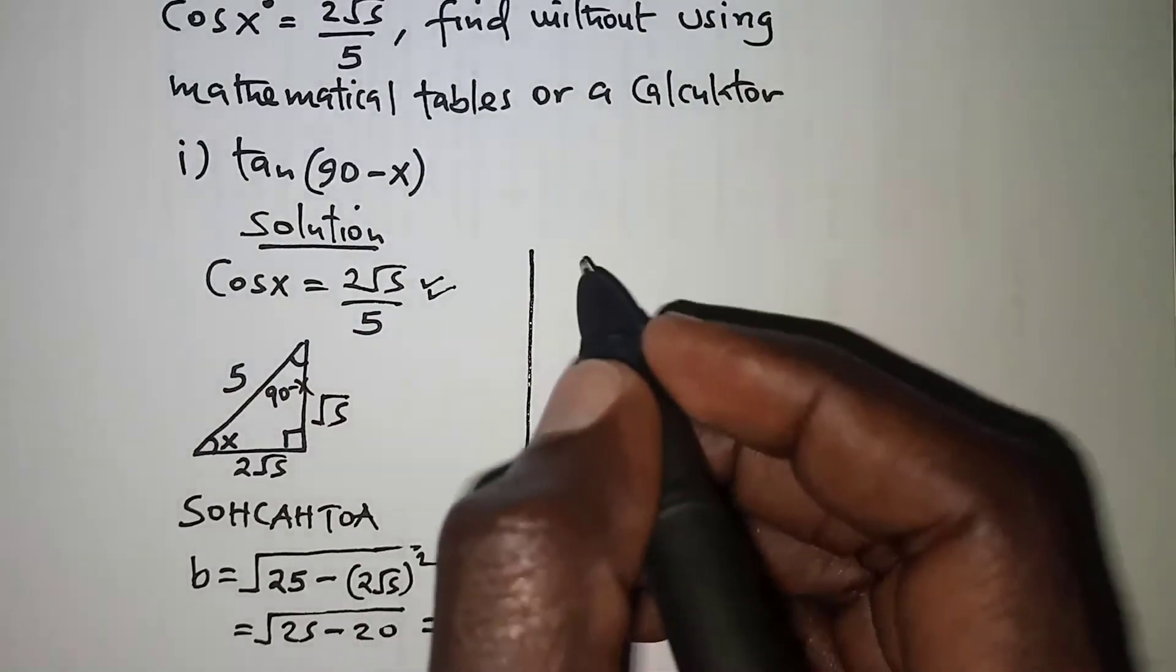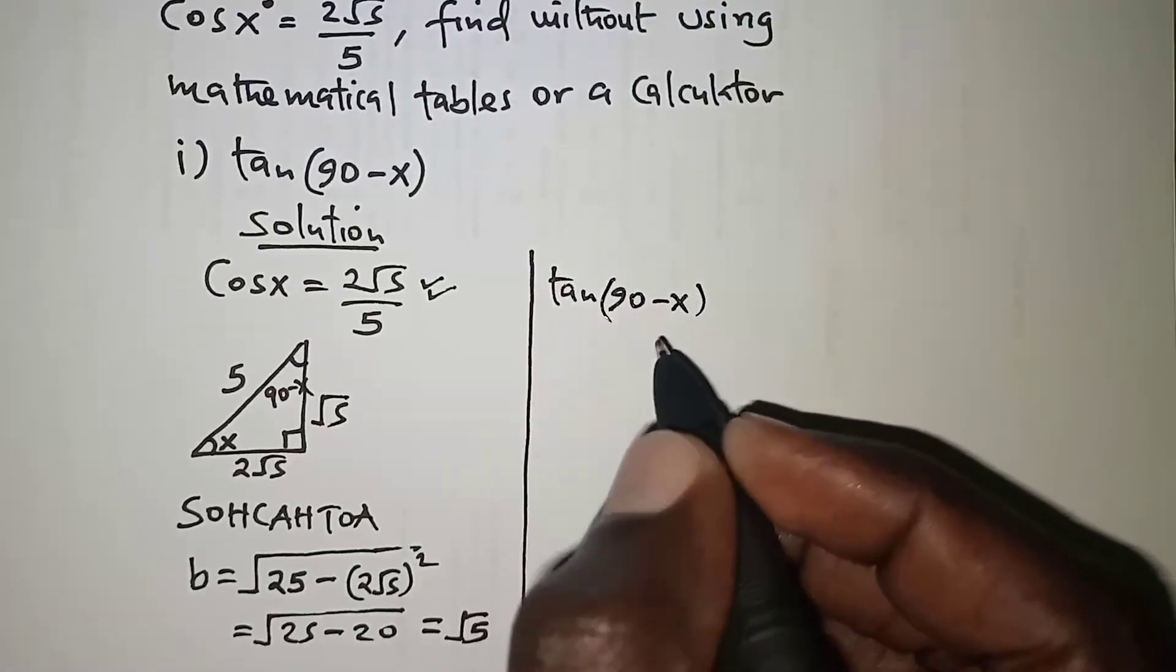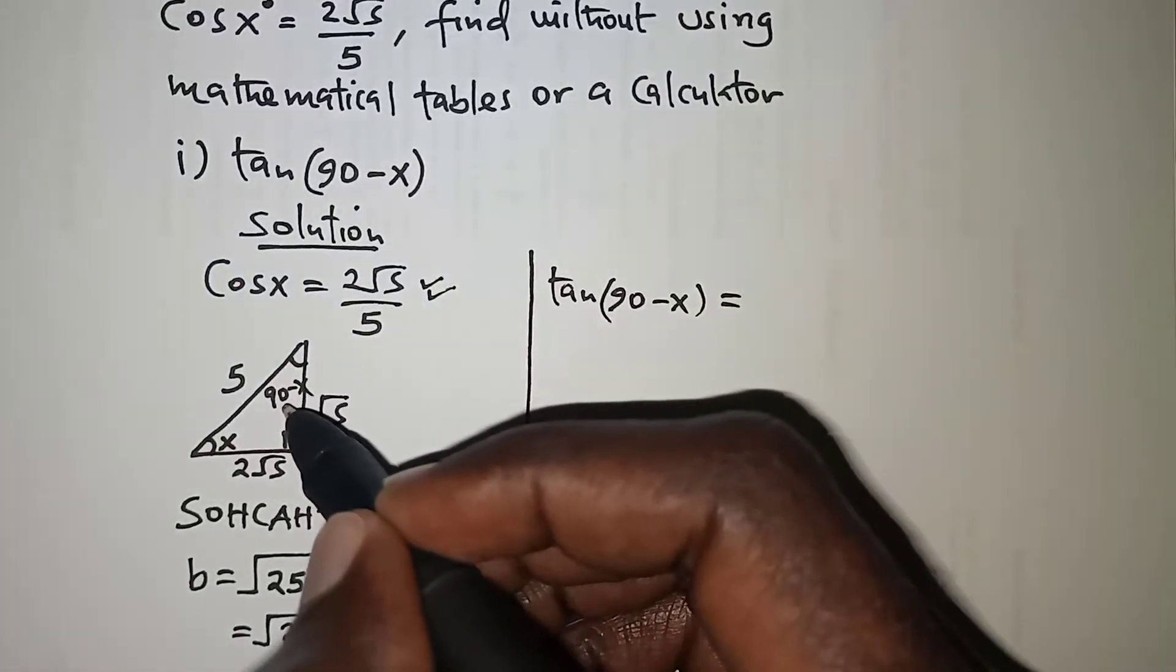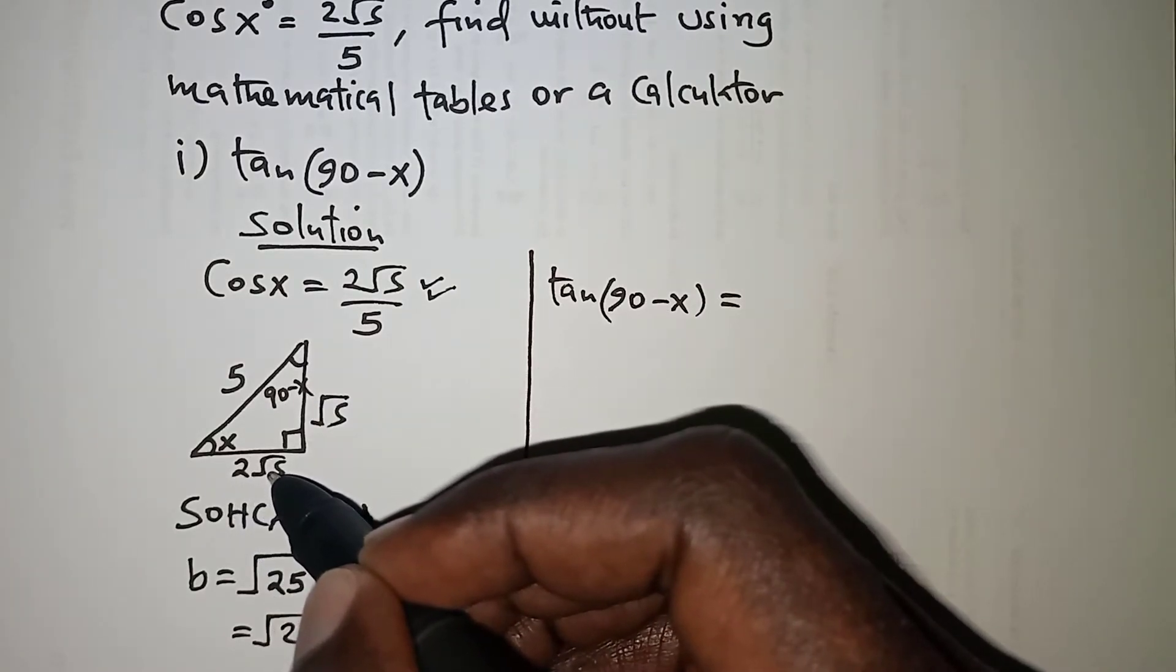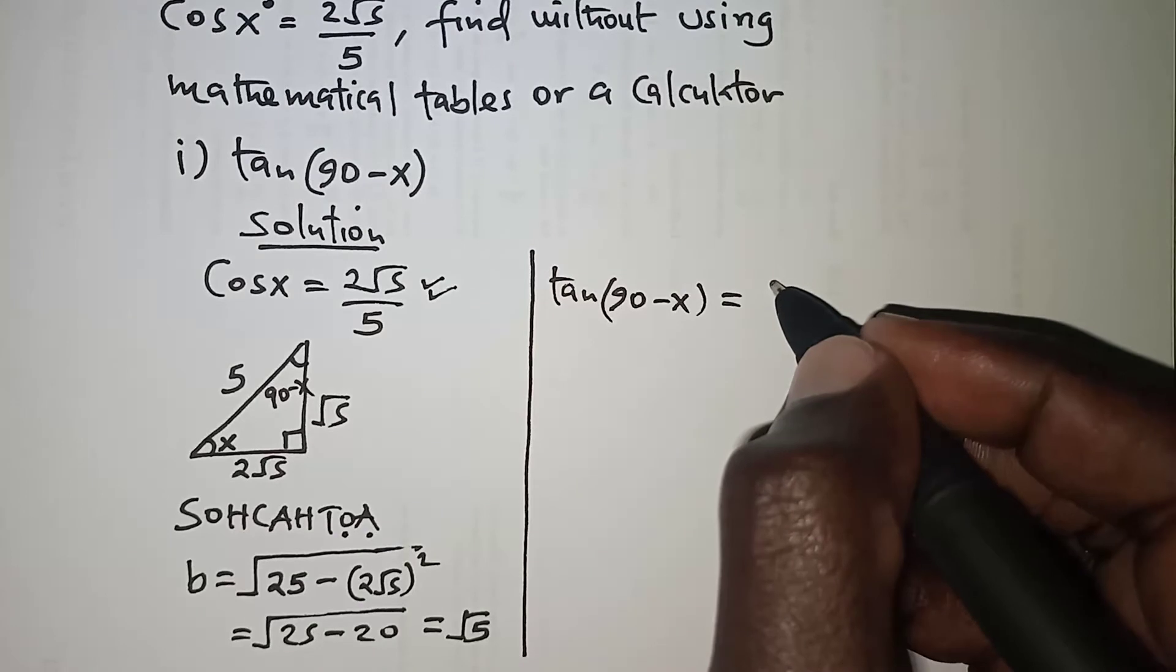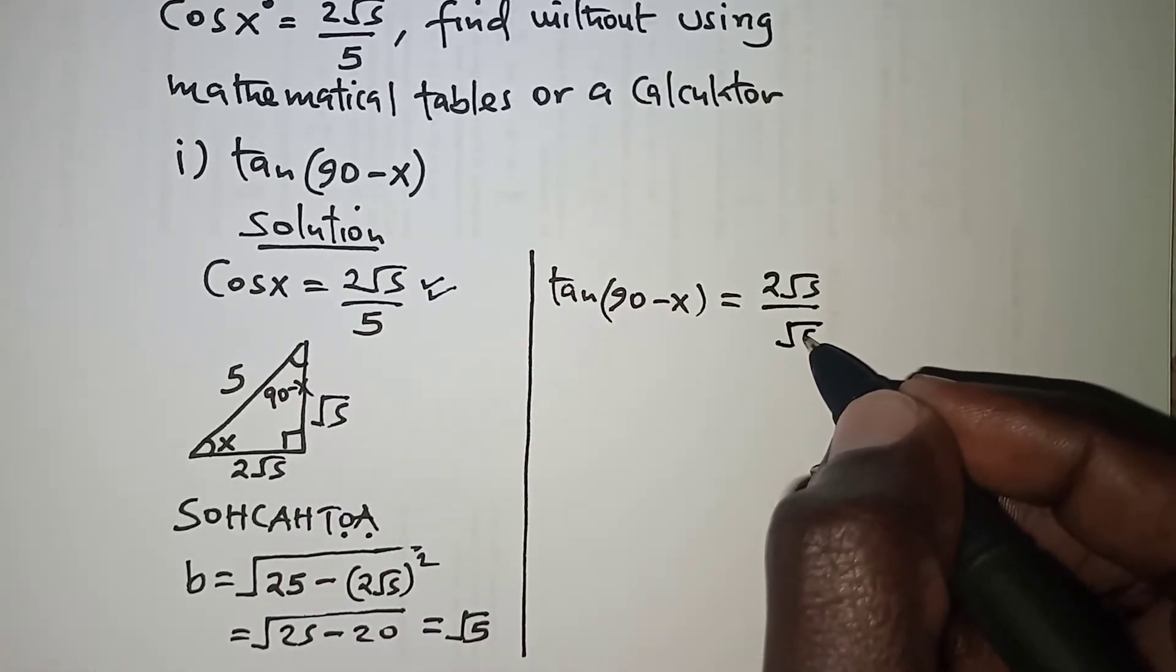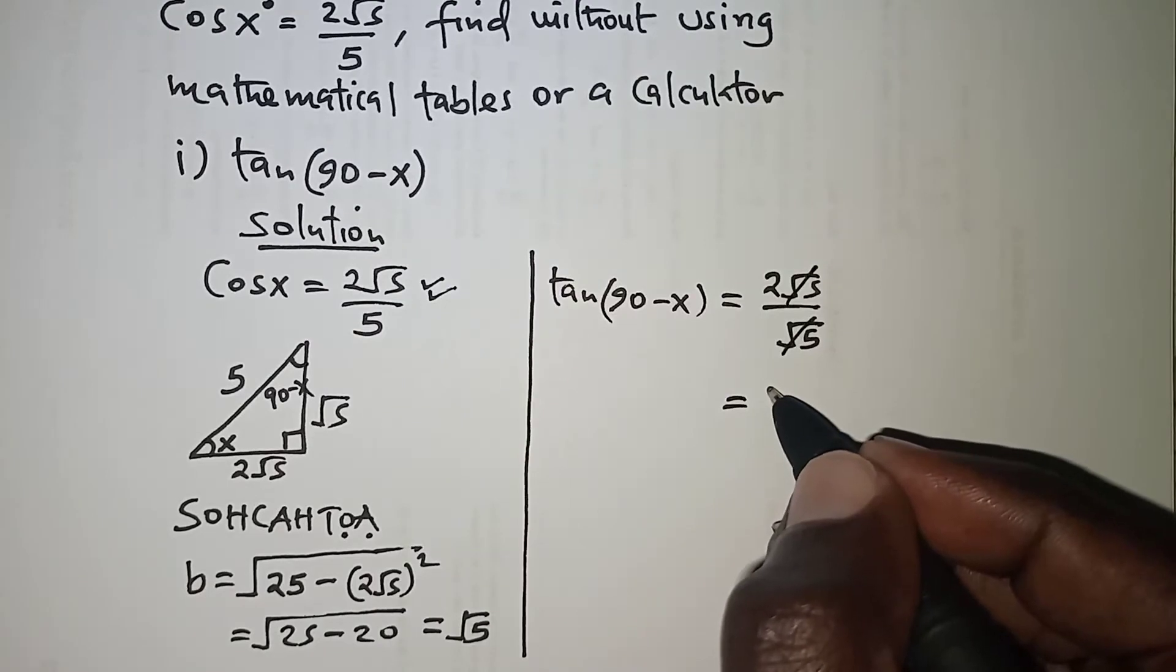So from there we are now set to get tangent of 90 minus x. So for this case we need to have from SOHCAHTOA tangent is opposite over adjacent and with respect to angle 90 minus x here the opposite side is 2 root 5 and adjacent is root 5. So we will have the opposite which is 2 root 5 over the adjacent which is root 5. So from here we realize that root 5 and root 5 will cancel so that we end up with 2.